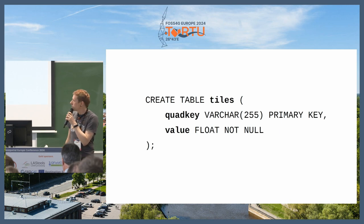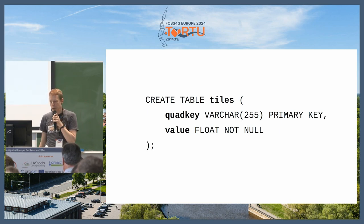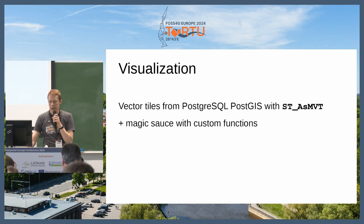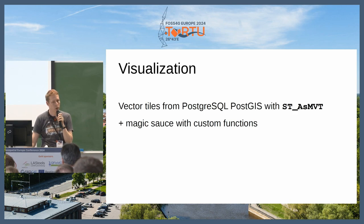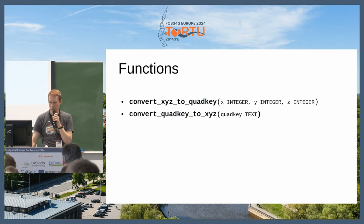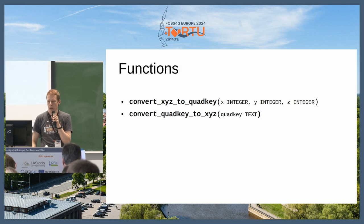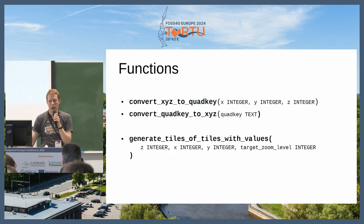In this small example, I make up a database that has the quad key and one value — it could be a lot more values, of course. Then I can use for visualization the computing power of Postgres and one of my favorite functionalities, which is ST_AsMVT — an export function from Postgres to export data directly as vector tiles for visualization purposes. I made a few functions for that in Postgres that are in a repo I will share. These cover converting XYZ to quad key, converting quad key to XYZ, and one function to actually do the magic and generate the tiles.